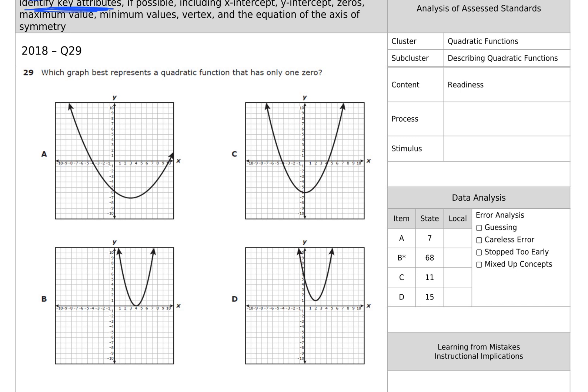Let's dig into question number one: which graph best represents a quadratic function that has only one zero? Now I say this is the easiest readiness standard only if you know the vocabulary. You have to know, for example, that zero is another word for x-intercept. It's where our line crosses the x-axis and your y is equal to zero.